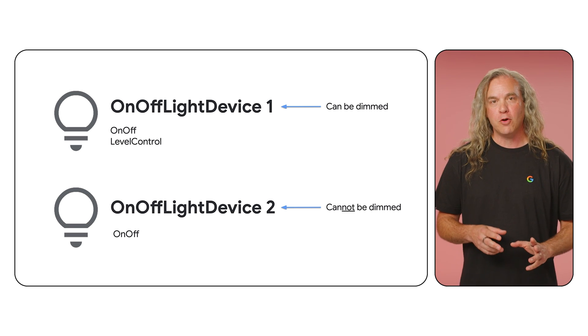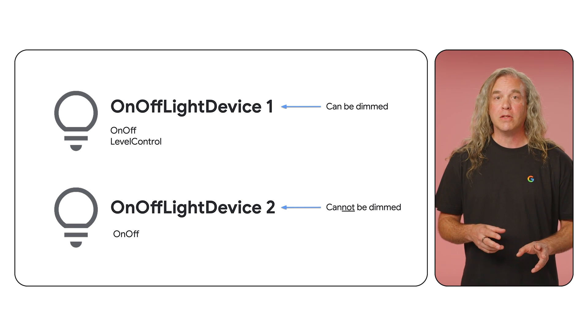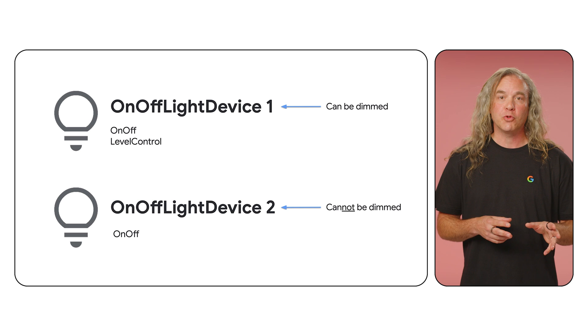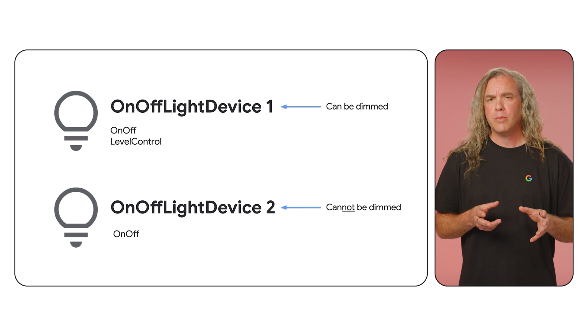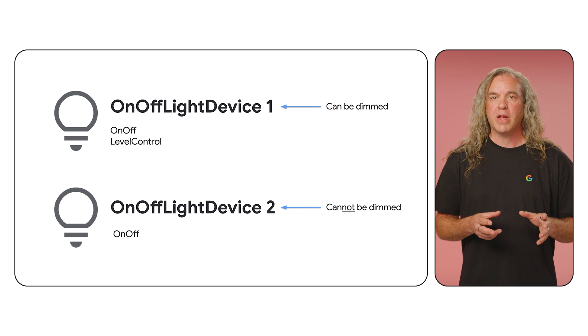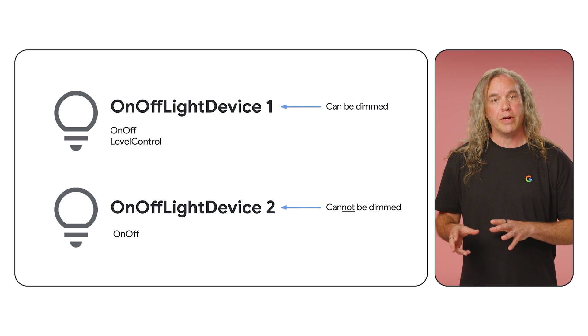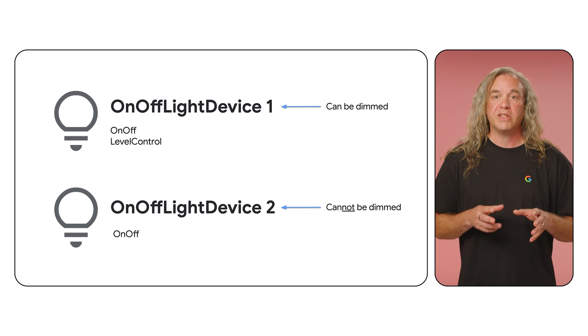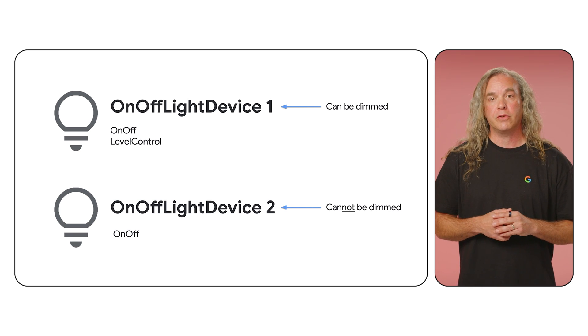And while we're on that topic, it's important to understand that not all devices of the same device type will be rendered in the Home APIs the same way. How a device appears is dependent on what features the device manufacturer implements in it. For example, from the perspective of the Home APIs, not all physical lights have the same attributes or commands. While some capabilities are required, not all manufacturers or the Google Home Playground implement the same complete set of attributes or commands for a particular device type.